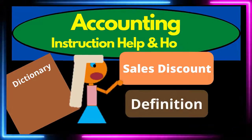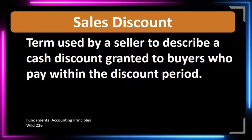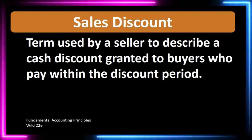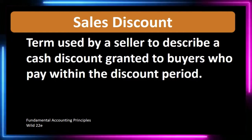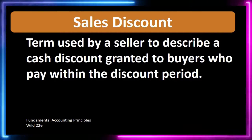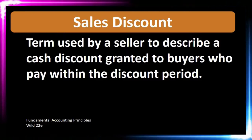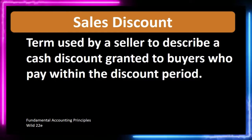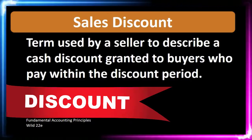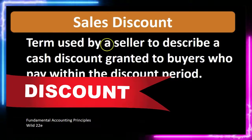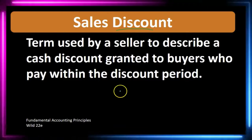In this lecture we're going to define sales discount. According to Fundamental Accounting Principles, Wild 22nd Edition, the definition of sales discount is a term used by a seller to describe a cash discount granted to buyers who pay within the discount period. So we are talking about a discount — a reduction of the sales price.